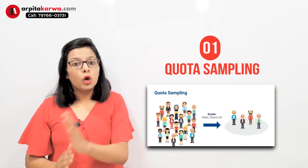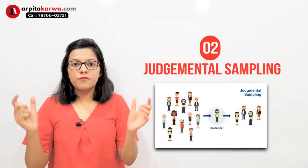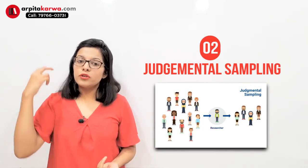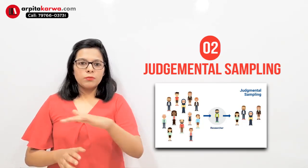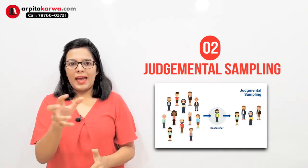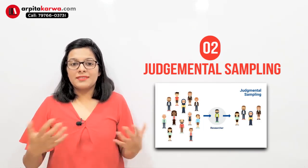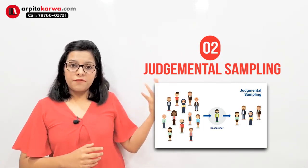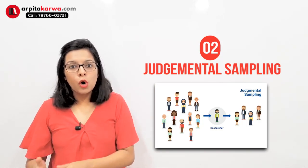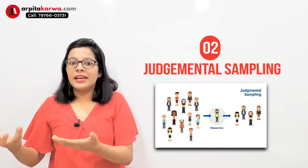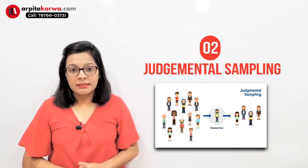The next type is judgmental sampling. It's evident from the term itself — when you use your knowledge and past experience to select the sample, that is judgmental sampling. If I feel that certain people are apt for my research and can meaningfully participate in it, I deliberately choose them. For example, if I am researching the effect anger has on health, I will deliberately choose people I know who become angry easily in their day-to-day life.